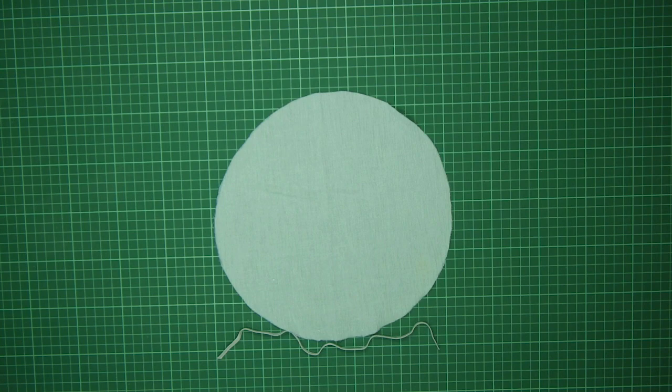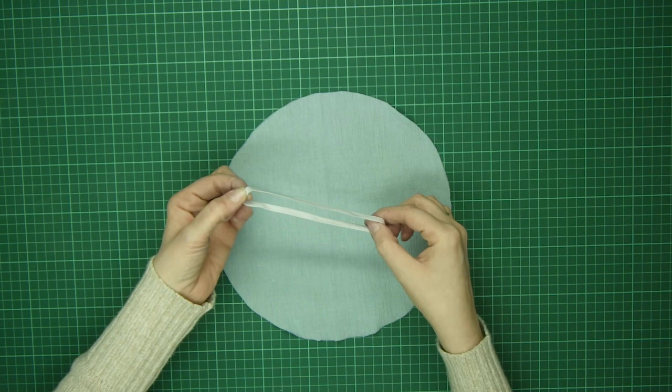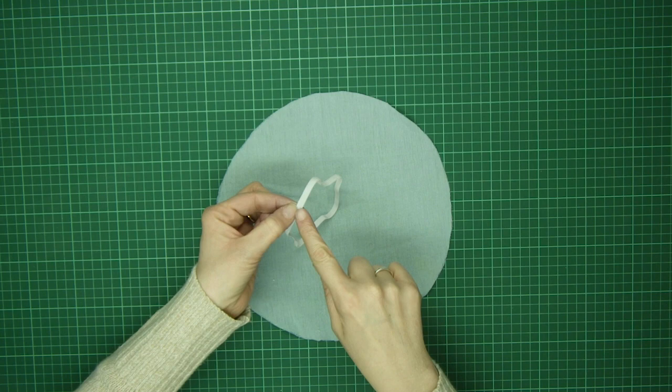I've got my piece of fabric that I've cut out from my bonnet and I've got my 30 centimeter length of elastic. This is seven millimeter wide elastic and I'm going to create a loop from this elastic and I'm going to stitch that together.